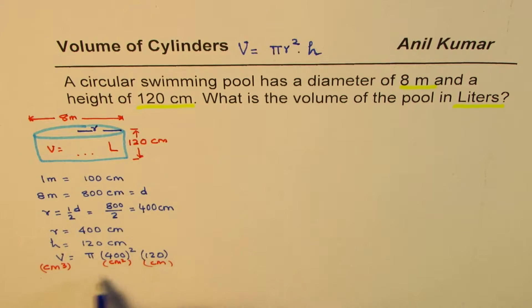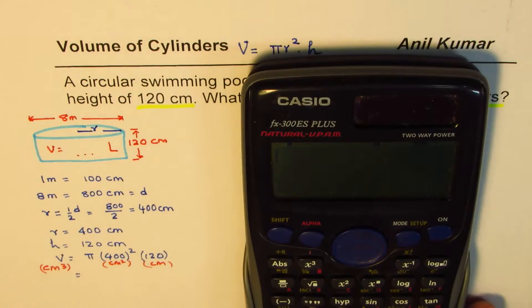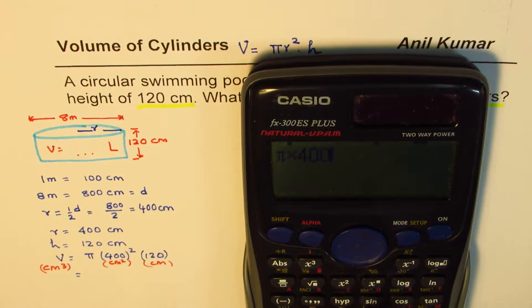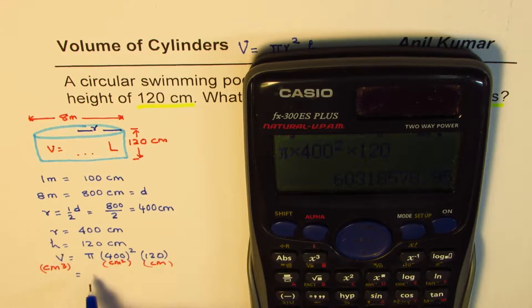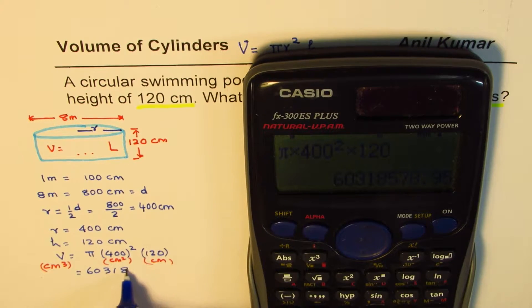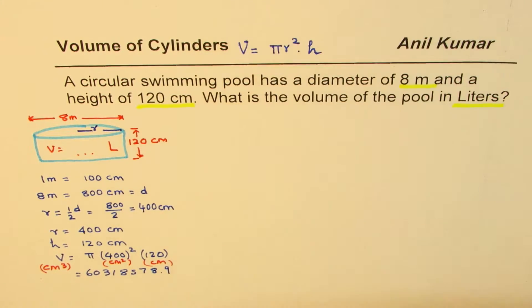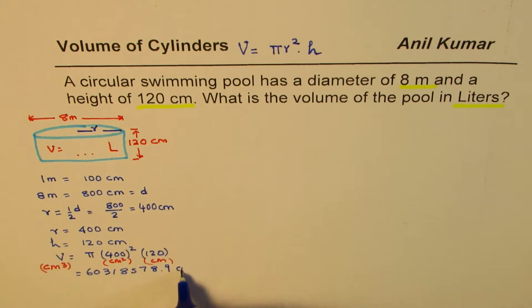Let's use the calculator to find this answer. Pi — you could write 3.14 or use the pi button on your calculator. Then we have 400 squared, times 120. We have multiplied all three numbers and we get a very big number: 60,318,578.9 centimeter cube. So we calculated the volume in centimeter cube.